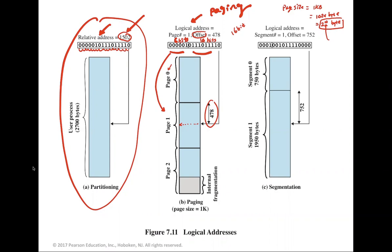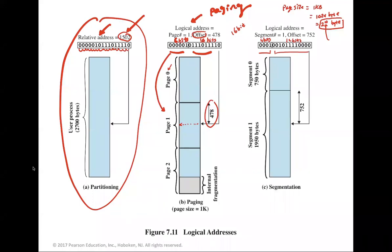The same strategy is used for simple segmentation: the logical address is divided into two portions — a segment number and an offset. For a 16-bit address, we use 4 bits for the segment number and 12 bits for the offset, since segments are variable size. For example, logical address 1502 would give segment number 1 and offset 752.